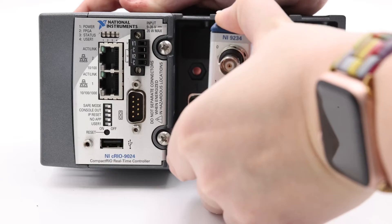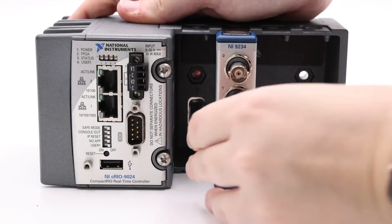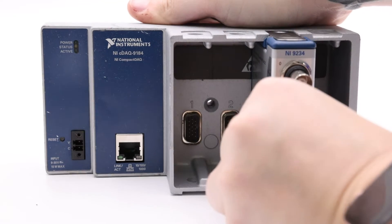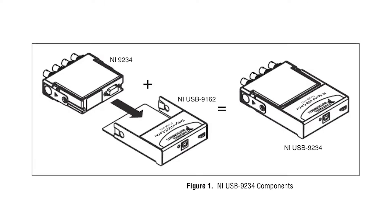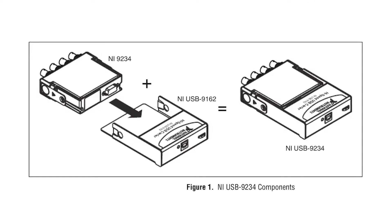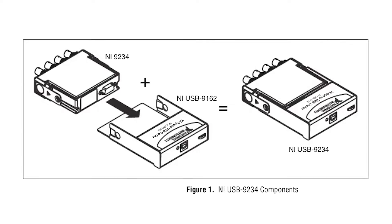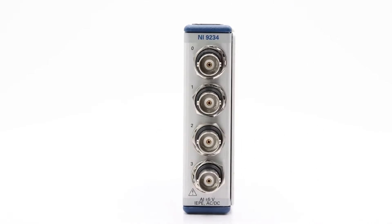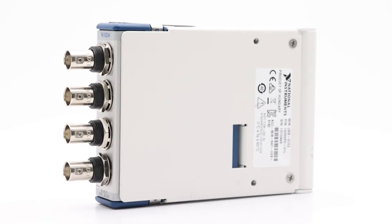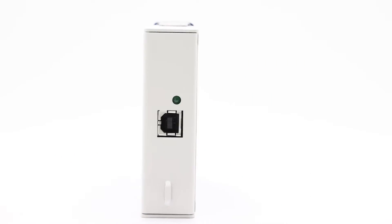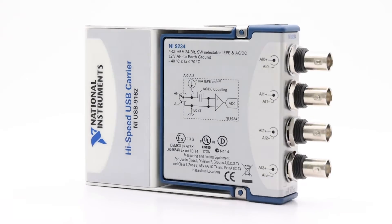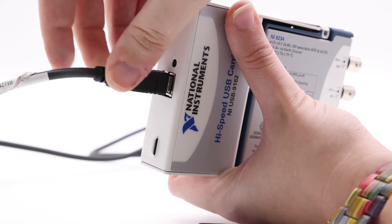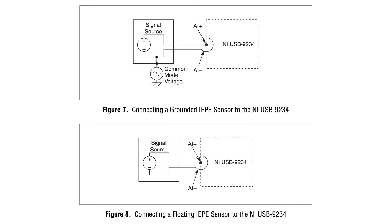Additionally, this module can be swapped from one platform to another without any changes necessary. When the NI9234 module is combined with an NI-USB9162 carrier, the specifications will be similar. This two-part module is referred to as NI-USB9234, and it can be linked to a computer with a USB cable and can also be mounted to a panel.